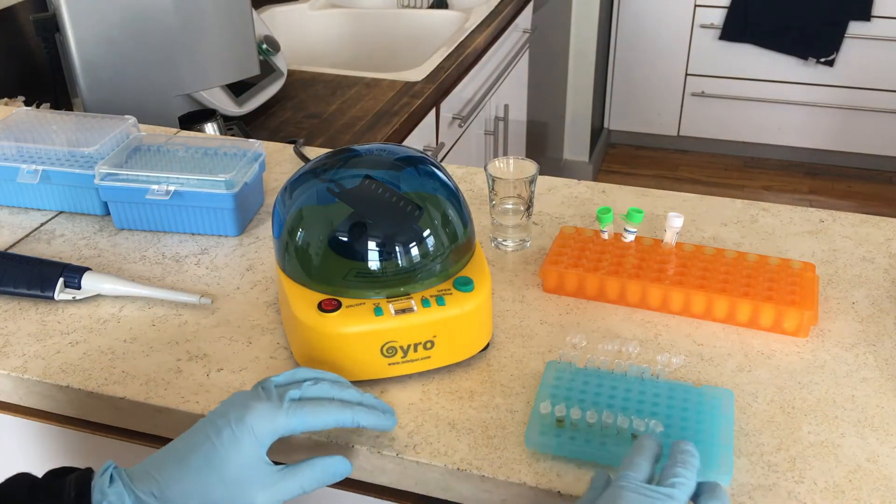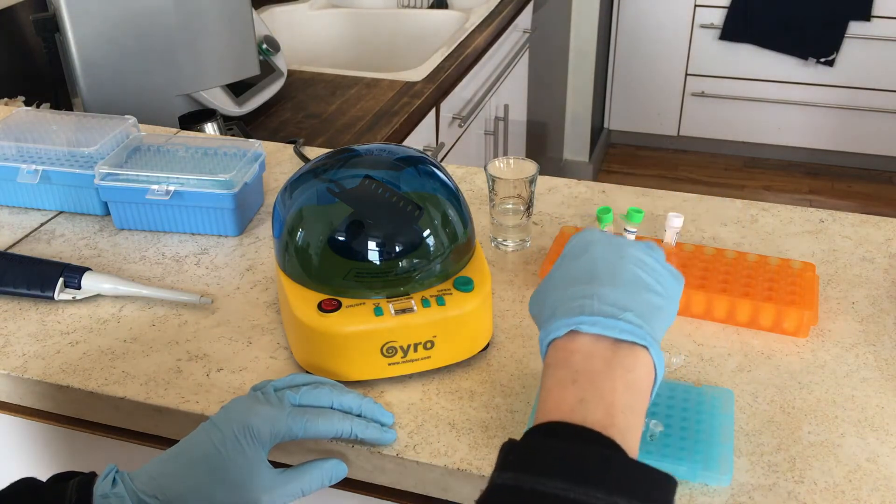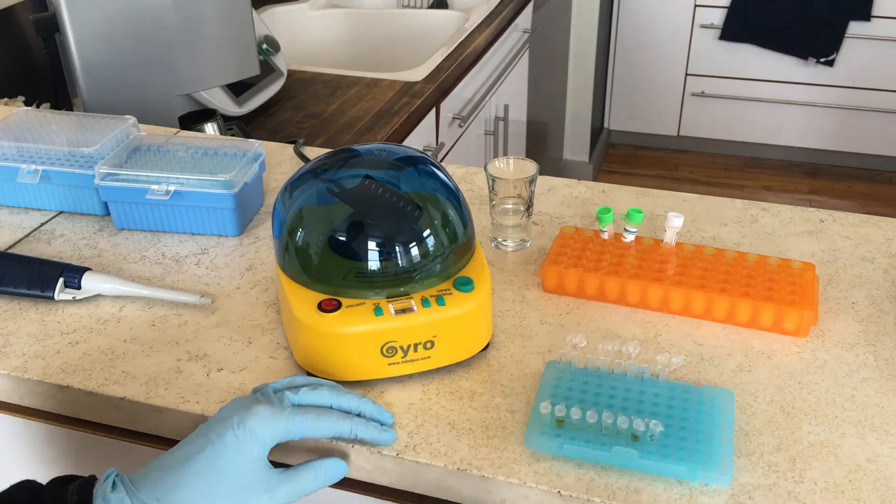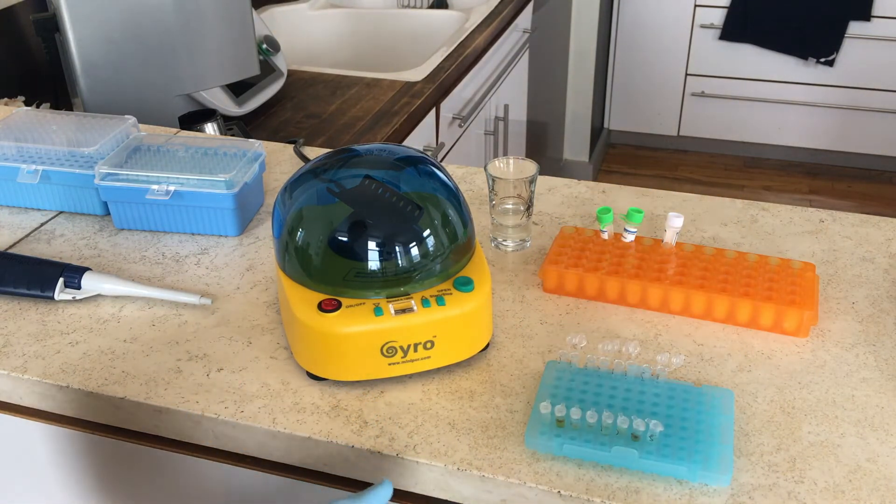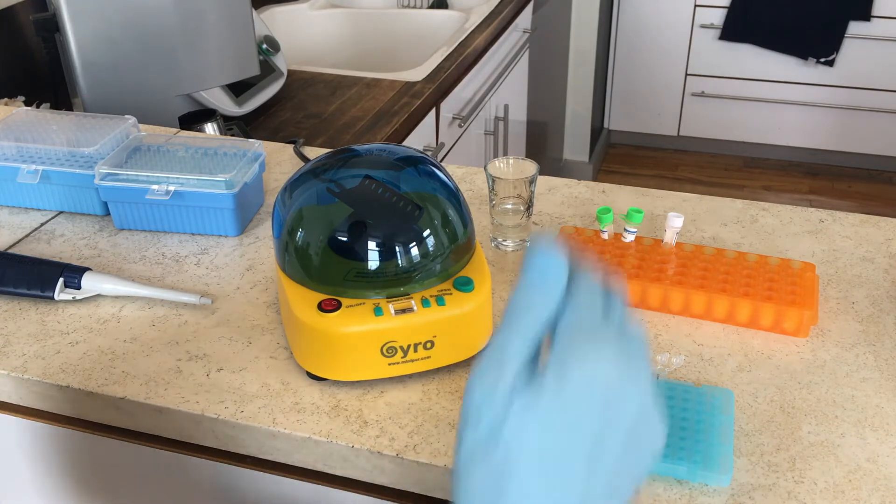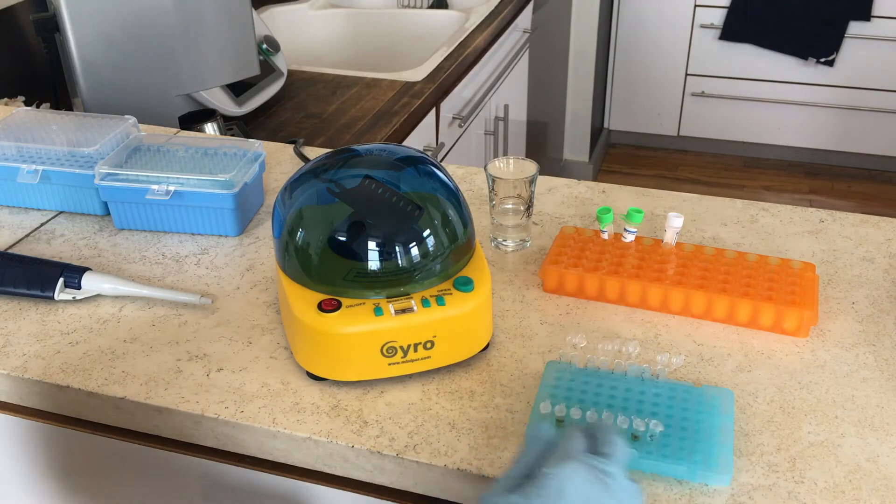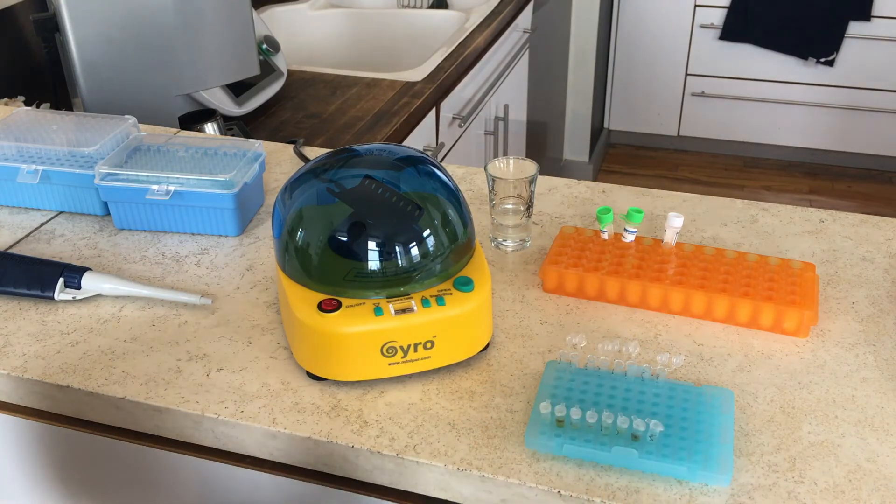You're going to take one microliter and put it in the new tubes in the back that have the master mix and fungal primer in them. And you're going to have to use a new pipette tip for every transaction because obviously there's fungal DNA in here and you don't want to mix it up between the different samples.